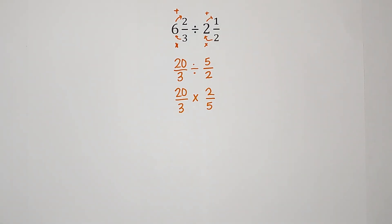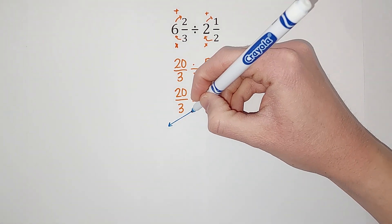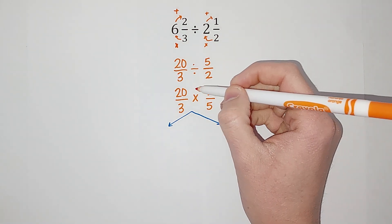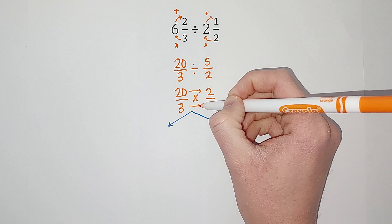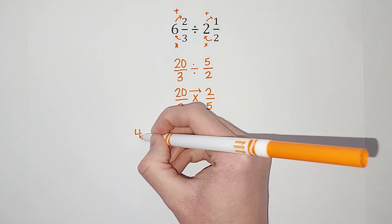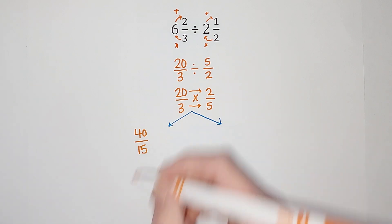Now there's two ways we can simplify this. We're gonna get the same answer. One of them we just simplify first and one of them we simplify second. So first one we're going to multiply first then simplify. When we multiply fractions we multiply straight across. So 20 times 2 gives me 40 over 3 times 5 gives me 15.